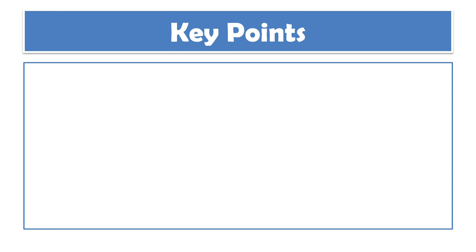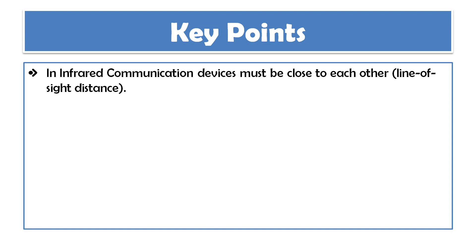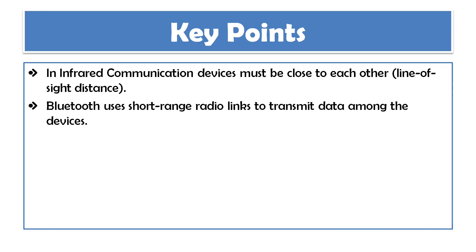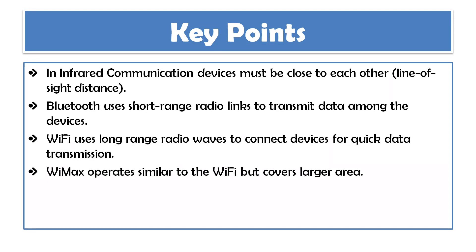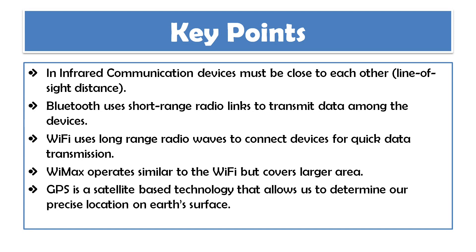Let's quickly go through all the points covered in this video. First, infrared communication — in this technology, devices must be close to each other in a direct line of sight. Bluetooth technology makes use of short-range radio links to transmit data among different devices. Wi-Fi uses long-range radio waves to connect devices for quick data transmission, with a range of up to 30 meters. WiMAX operates similar to Wi-Fi but covers a larger area of around 50 kilometers. Finally, GPS is a satellite-based technology that allows us to determine our precise location on Earth's surface.